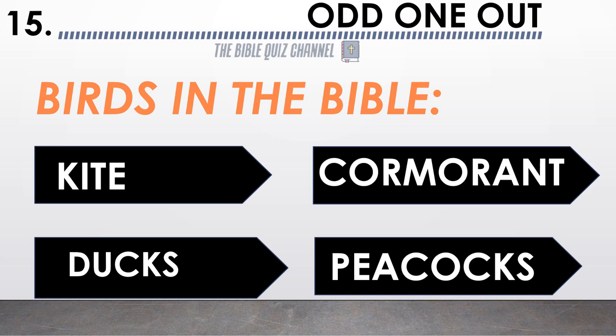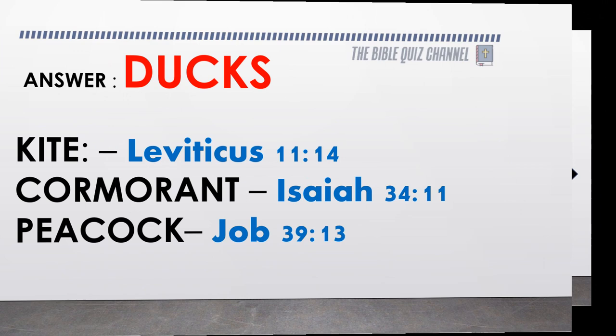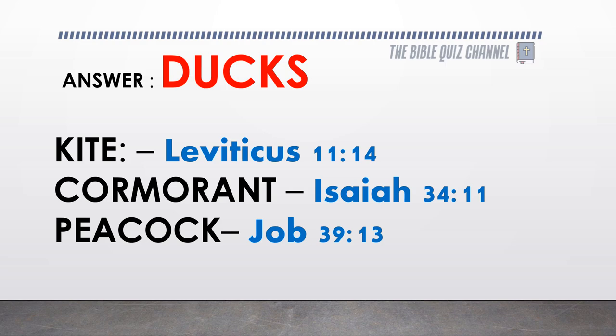Birds in the Bible — kite, cormorant, ducks, peacocks. Which is the odd one out? The answer is ducks.